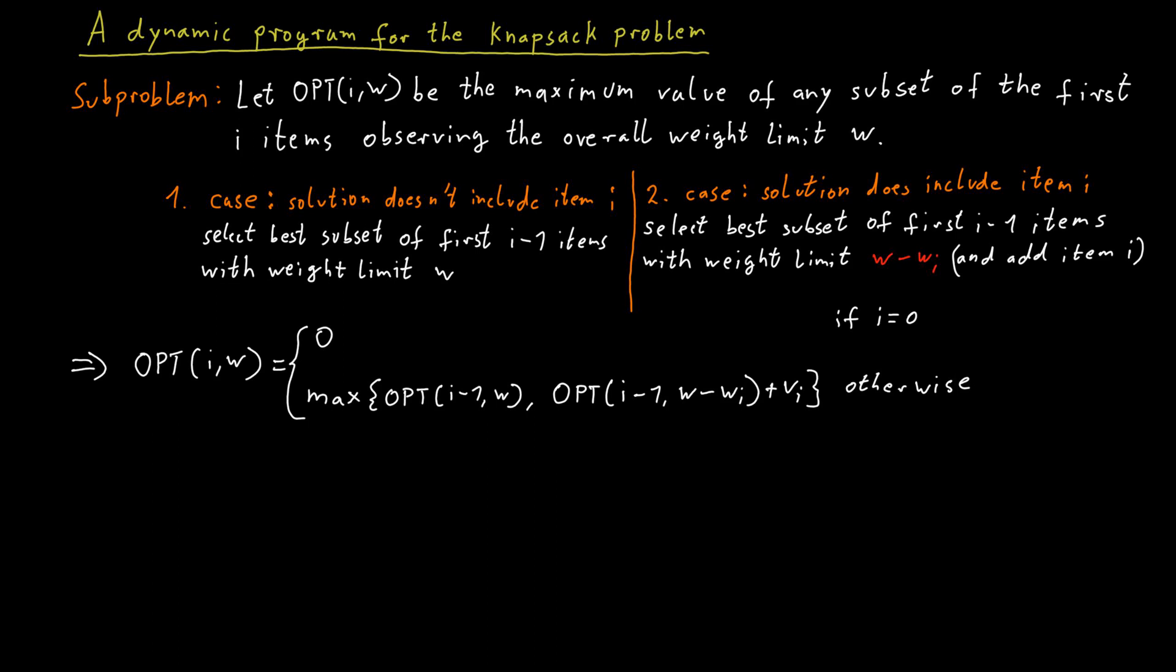There's one special case where we have to be a bit careful. So if item i itself already weighs more than what the weight limit of the knapsack is, so if w_i is already bigger than lowercase w, then of course we cannot pack item i. So we are already in this first case. We know that for sure. So that's kind of a technical special case.